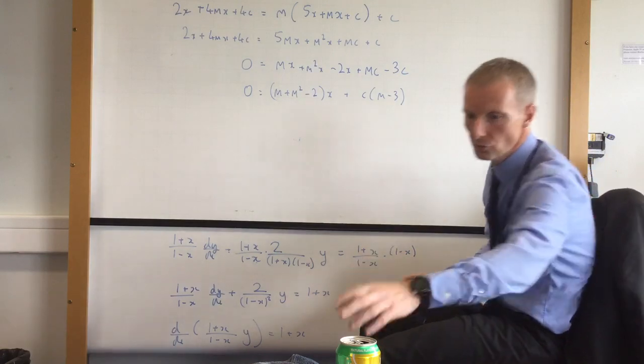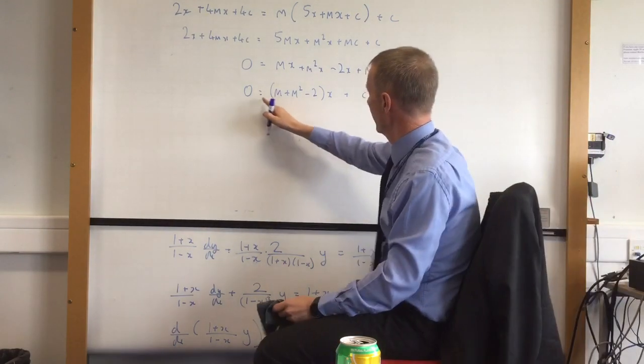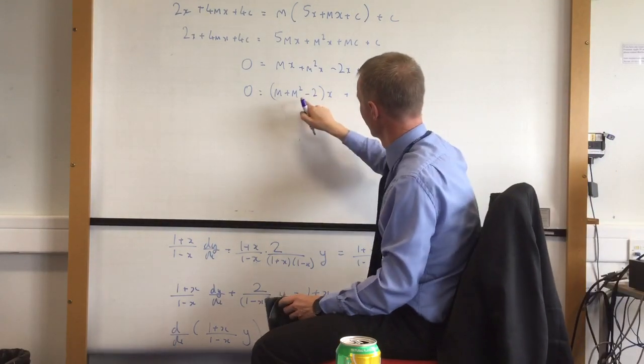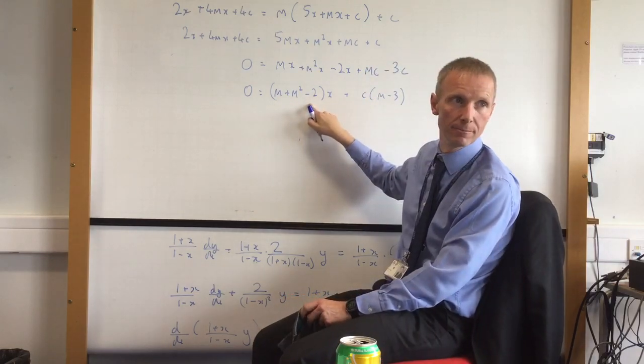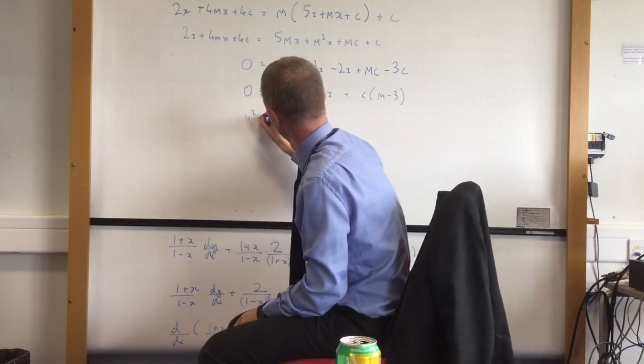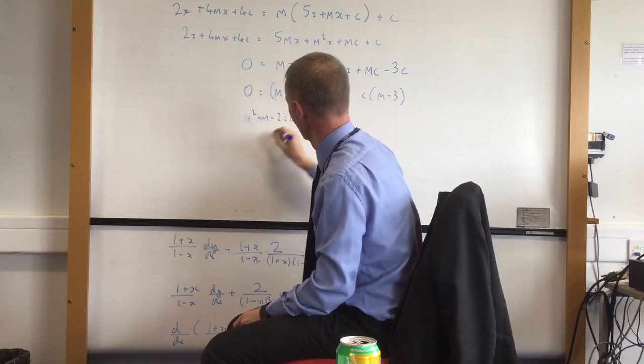Right, so I want all this to be equal to 0, which means that thing in front of x there, that has got to be nothing. So m squared plus m minus 2 has got to be nothing.